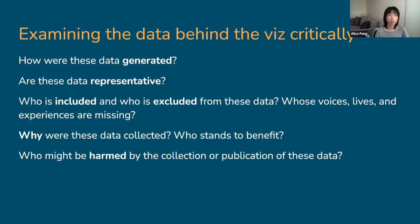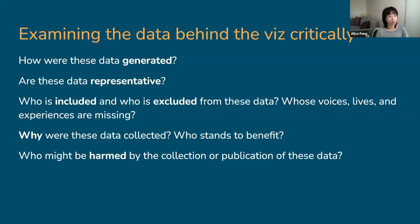Another really important point is to critically examine the data we are using in our charts and maps. Just as analyzing flawed data generates flawed results, trying to visualize flawed data will also generate misleading and deceptive charts. When thinking about DEI issues specifically, we should check our data for ways they may be biased or the product of racist or oppressive data collection systems. Ask yourself: how were these data generated? Are these data representative? Who is included and who is excluded? Whose voices, lives, and experiences are missing? Why were these data collected? Who stands to benefit? And who might be harmed by the collection or publication of these data?